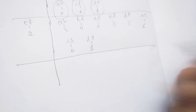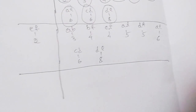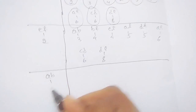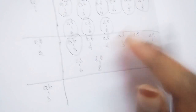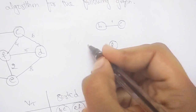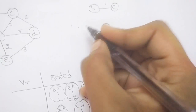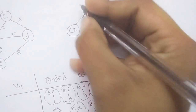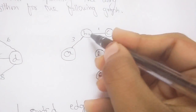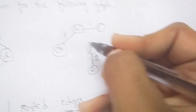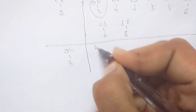Once edges form a cycle you need to exclude them. Now take AB with weight 3 as it has the minimum remaining weight. Attach AB to the graph. Then check BF: attaching BF does not form a cycle, so we take BF out.